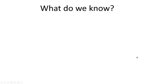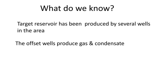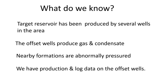To start the evaluation you have to look at what data you know about the well area. In this case, our target reservoir has been produced by several wells in the area, and these offset wells produce gas and condensate — so we're expecting gas for our prospect. We know the nearby formations are abnormally high-pressured, and we have the production log data from the offset wells. We're going to use that combined with the data we have on our prospect to help evaluate the size of the prospect.